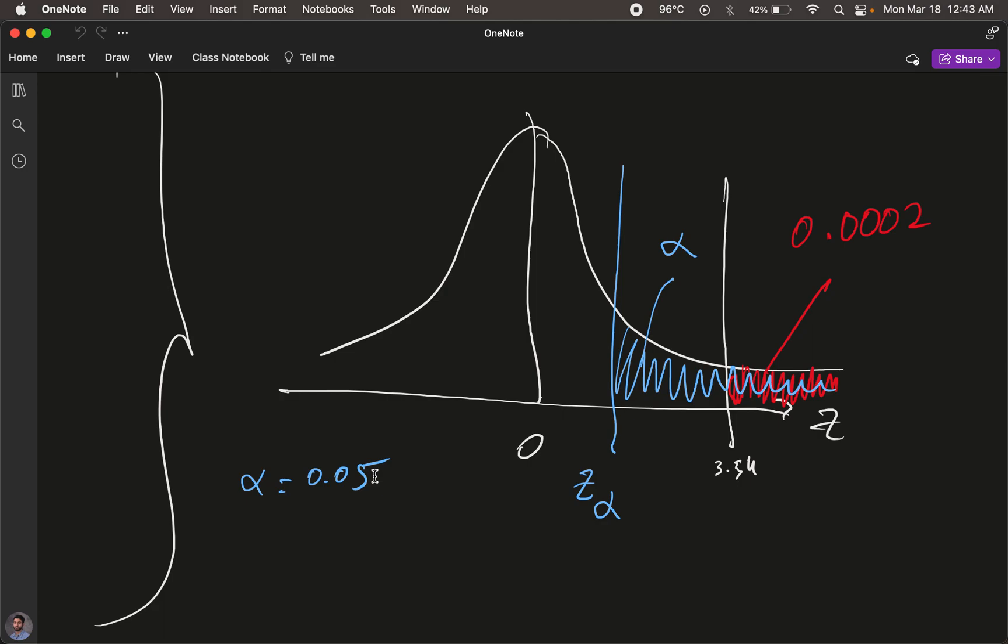In our case, if we set it out to 0.05 and we see the likelihood that our observation of 82 sample mean was a coincidence, well it was less than alpha, therefore it was not a coincidence, and so we could reject the null hypothesis.